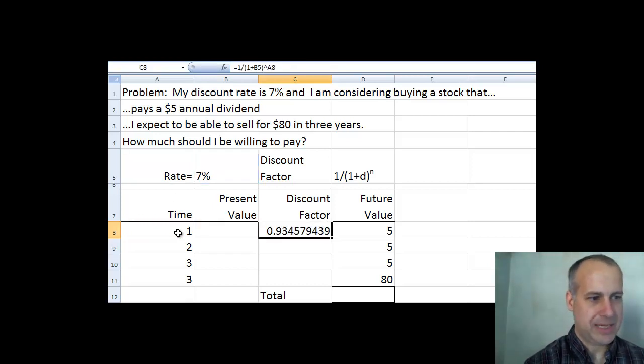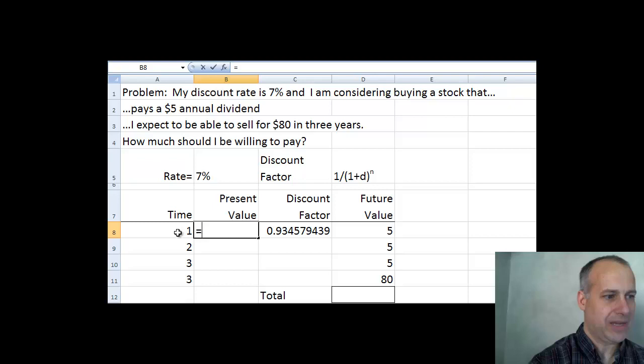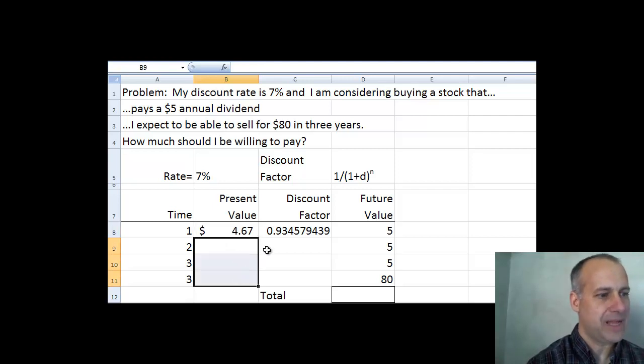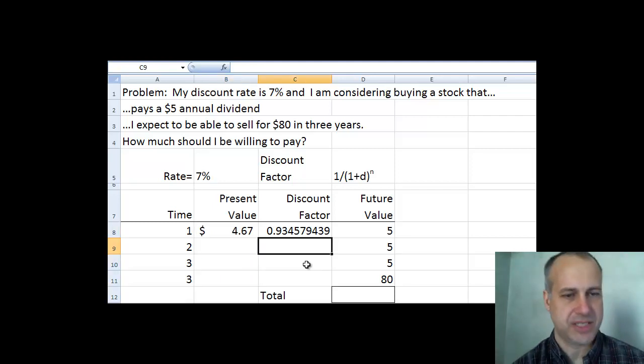0.93 times $5 is going to get my present value. So again, I multiply the discount factor times the future value to figure out what this is going to be worth today. So my $5 received in a year is $4.67 today.